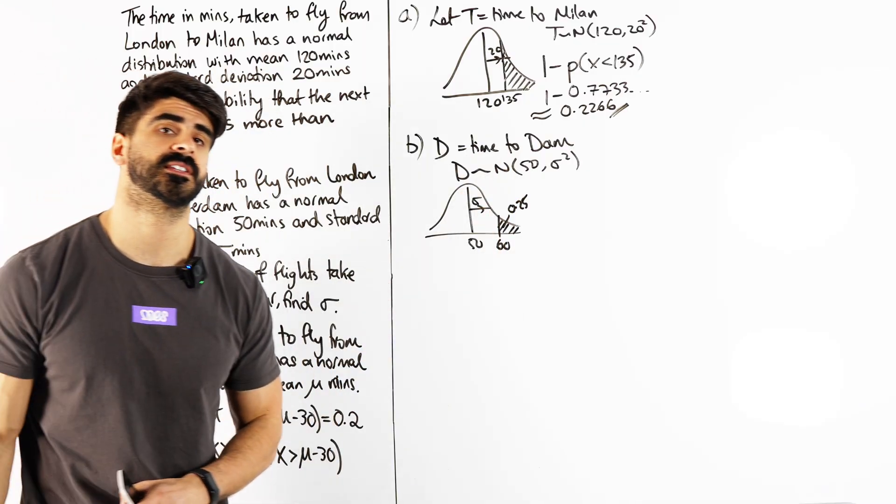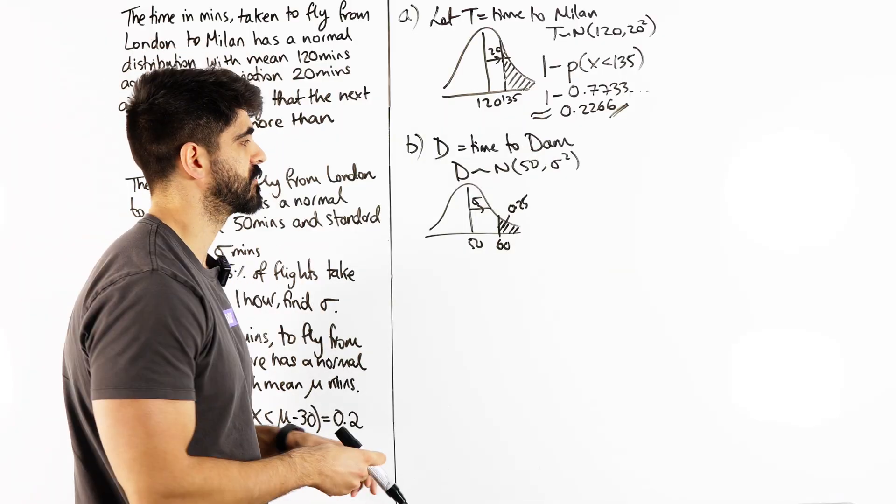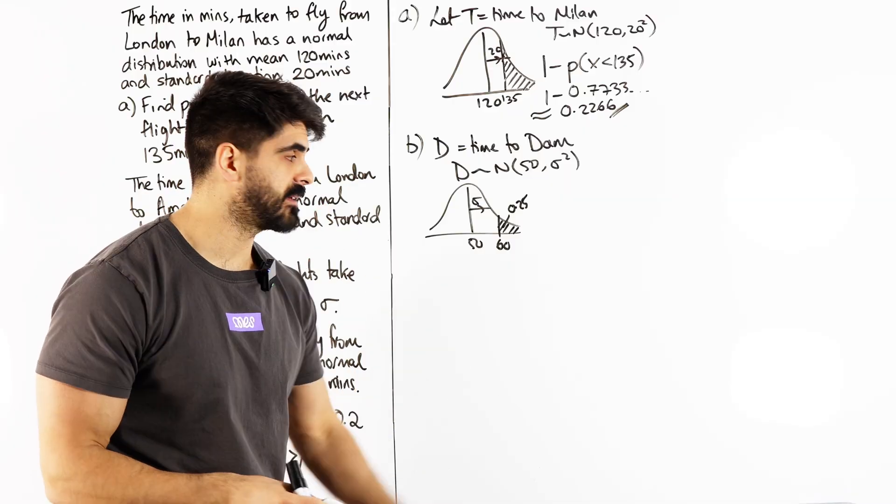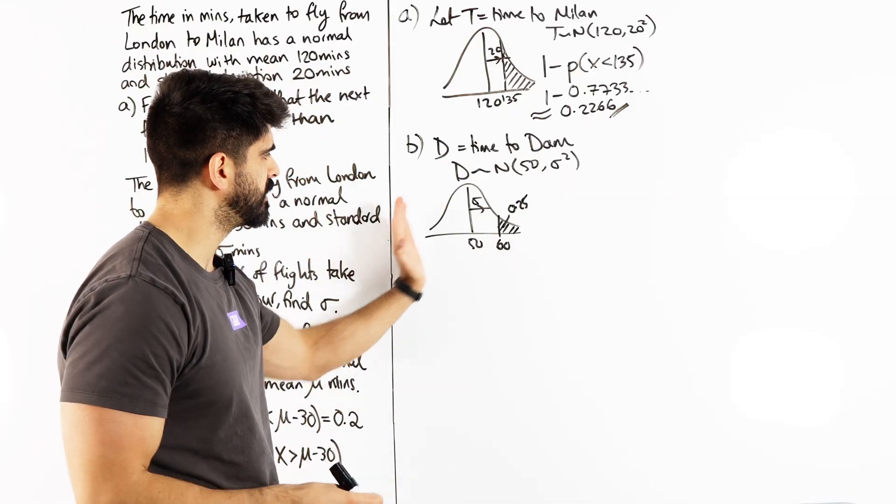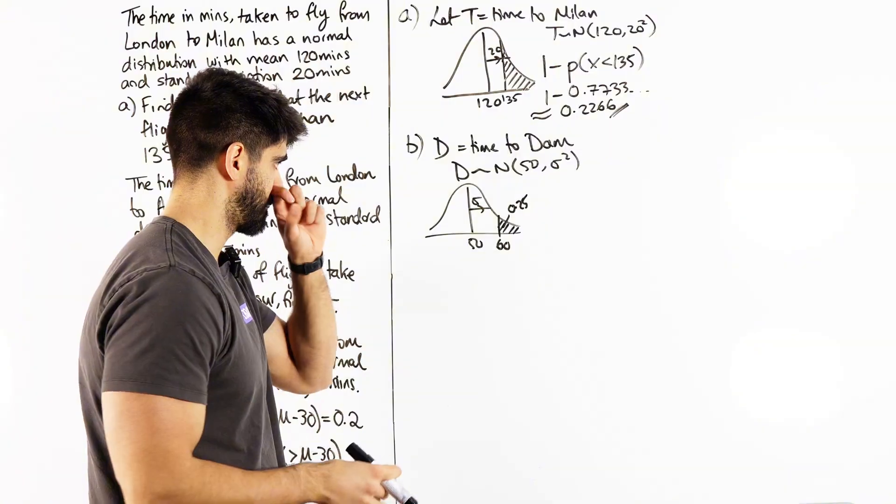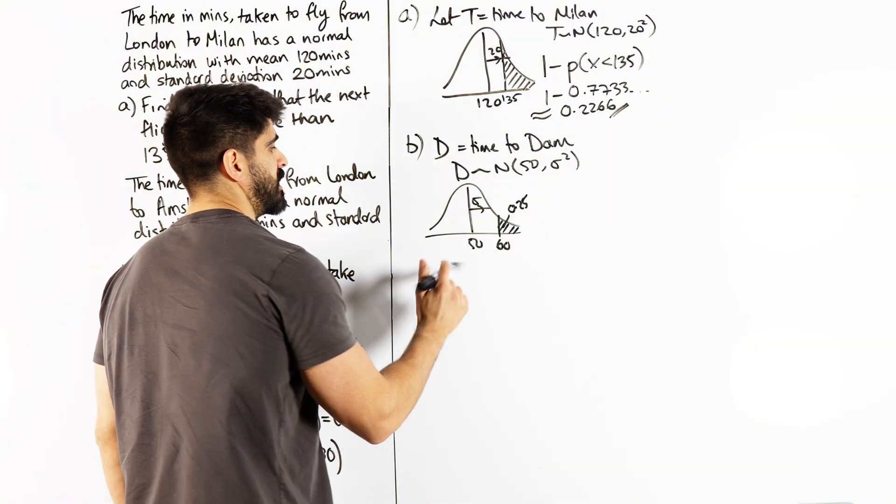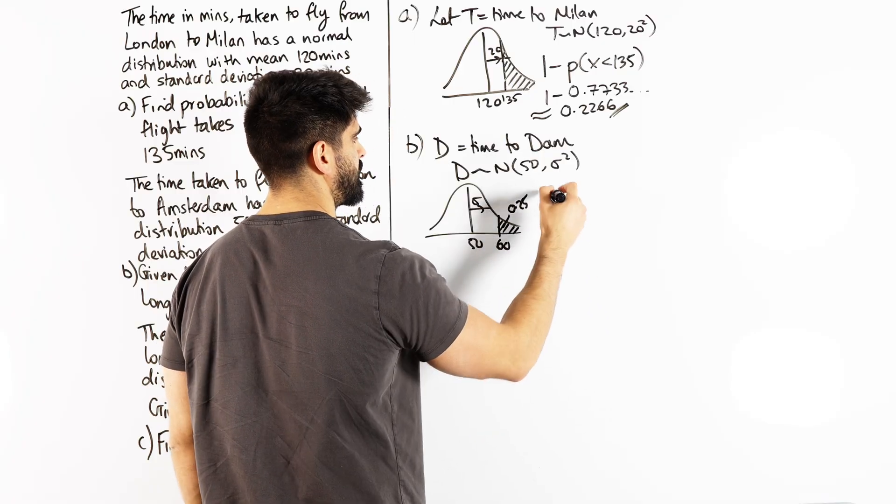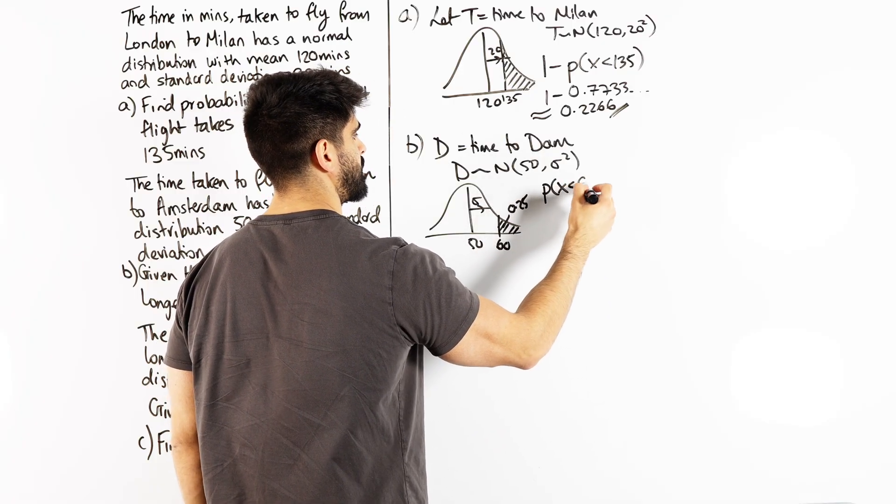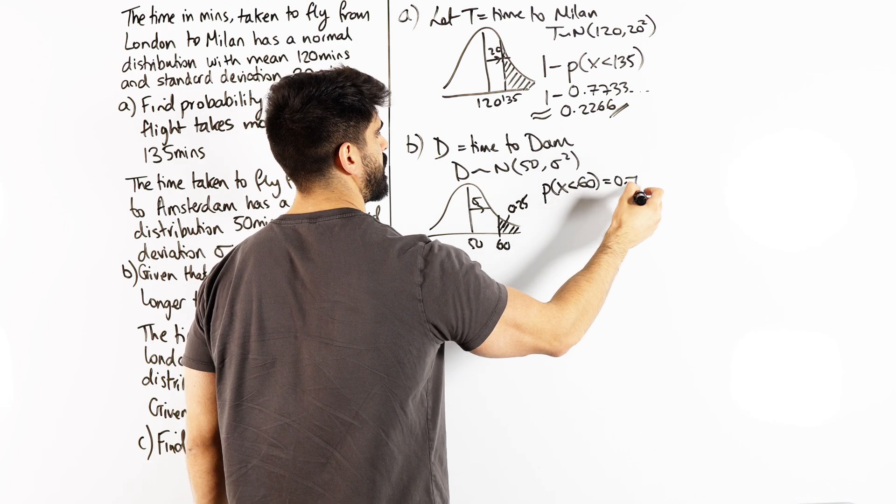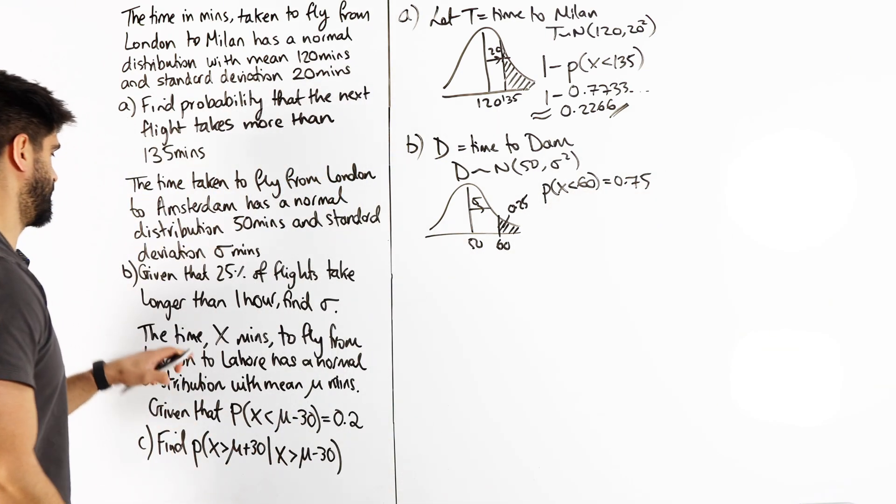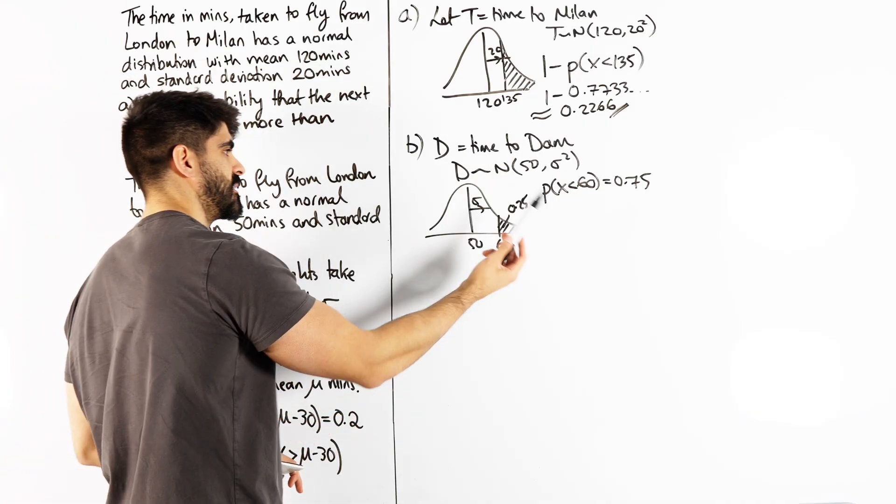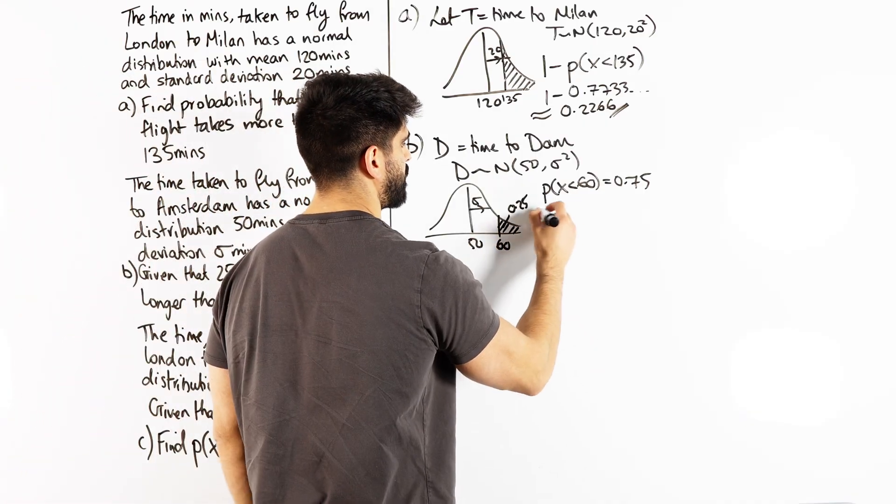Here we are going to have to use the z distribution, which means we can write phi, we can utilize phi. So we need to write a cumulative statement for this. Cumulative meaning up to 60. So we're saying not greater than 60 is 0.25. We're saying less than 60 is 0.75. It says longer than one hour is 25%, so less than an hour is 75%.